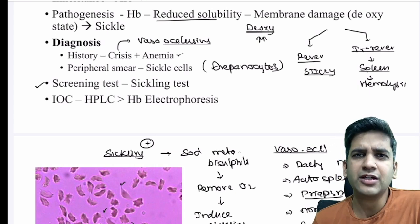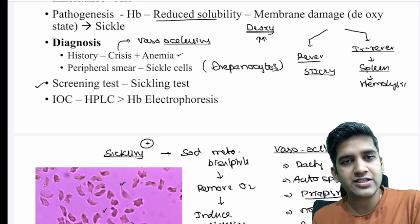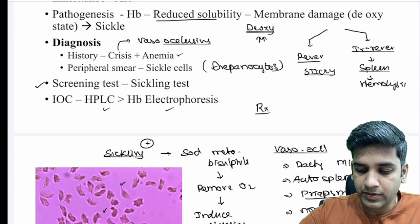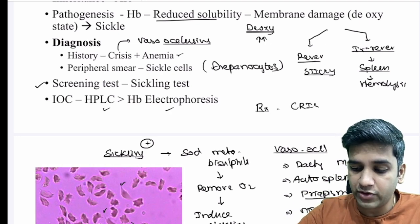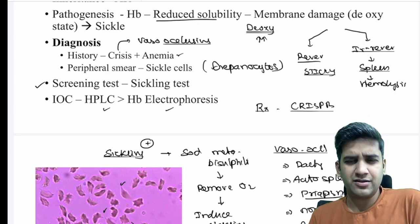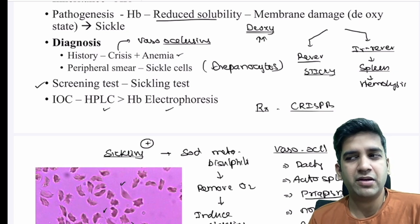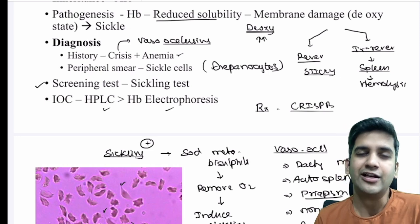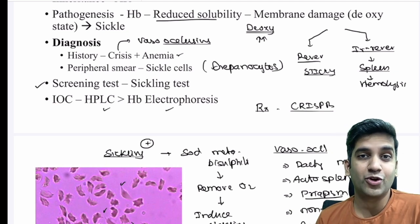Confirmatory investigations include HPLC and hemoglobin electrophoresis. Regarding treatment, sickle cell anemia is the first disease to have received a breakthrough treatment with CRISPR technology — a modality of gene therapy. After CRISPR, vaso-occlusive crisis and painful episodes have reduced significantly, and the lifespan of patients has improved greatly.